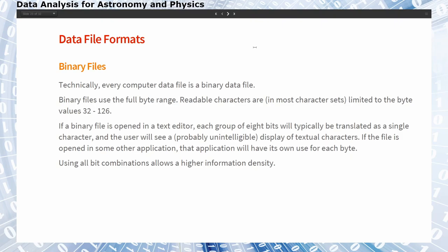Then there are binary files, which technically every computer data file is. The difference to ASCII files or text files is that binary files use the full byte range, while the actually readable characters corresponding to the characters on your keyboard are only limited to the lower half of the full byte, so values between 32 and 126.